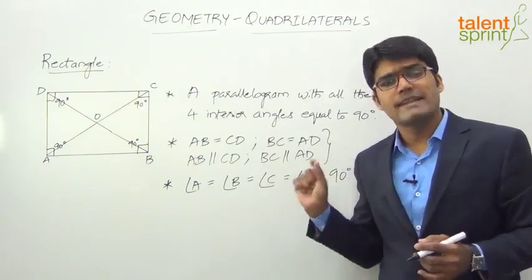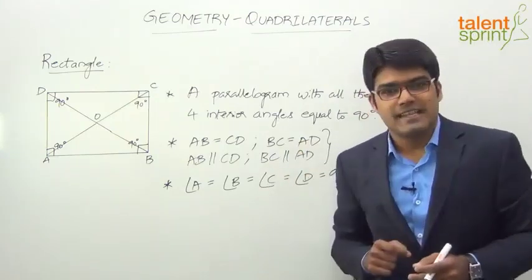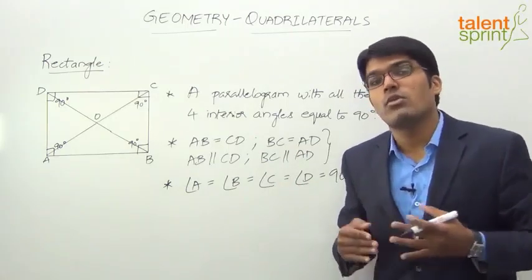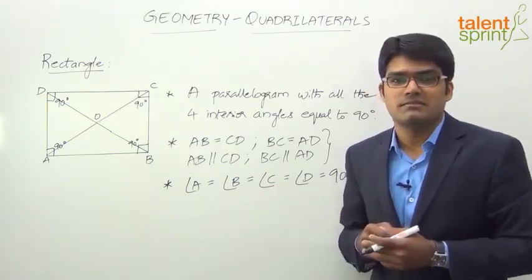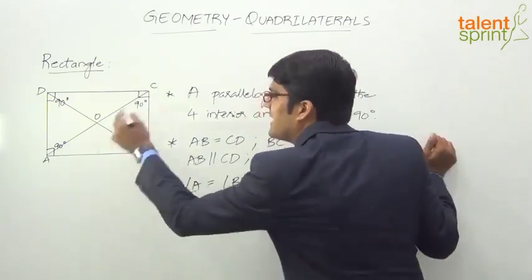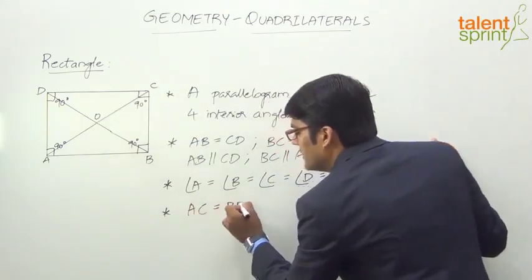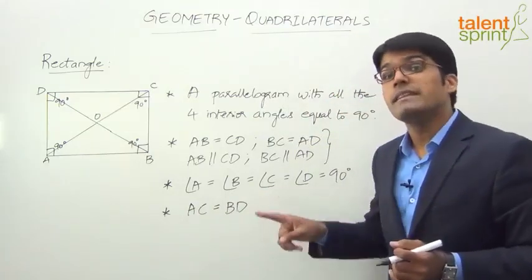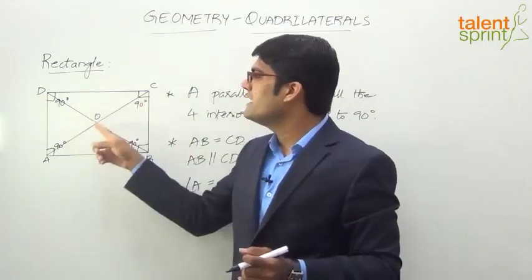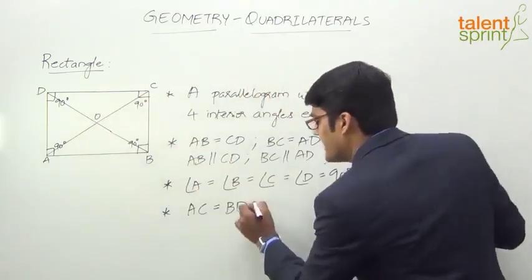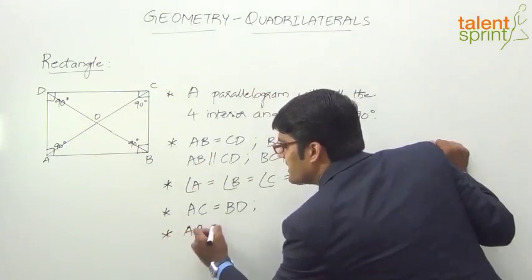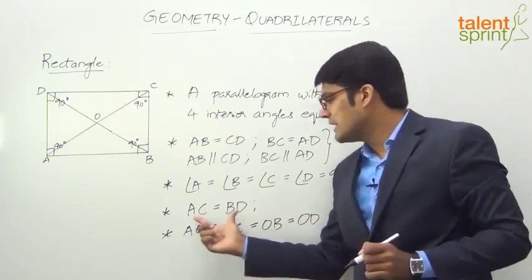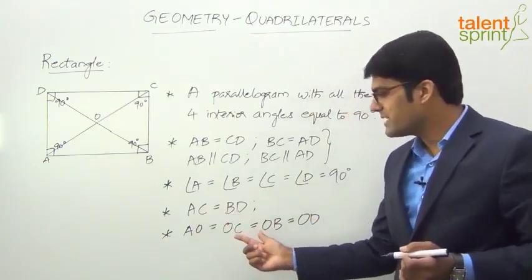Now let us discuss the diagonals of a rectangle. In a rectangle, the diagonals are equal in magnitude and also bisect each other. One important point to note is that diagonal AC equals diagonal BD — this was not true in the case of a parallelogram, where the diagonals were not equal. Here the diagonals are equal and also bisect each other. AC and BD intersect at point O, so AO equals OC.